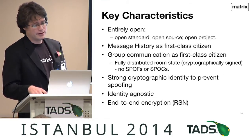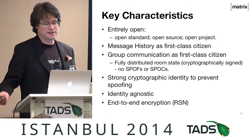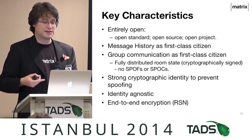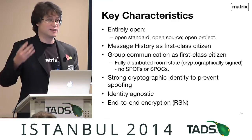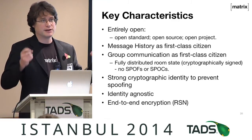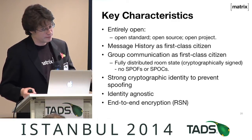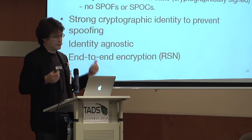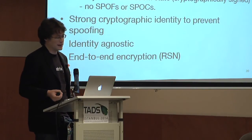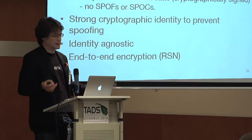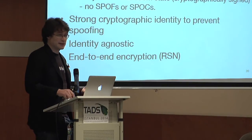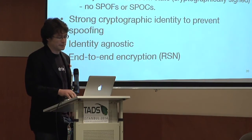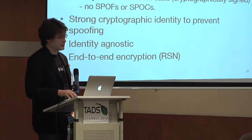Our characteristics: completely open — open standard, open source, open project, open federation. Message history is a first-class citizen; this is something loads of people have got wrong over the years. Nowadays it's table stakes — you have multiple devices, you want your history in sync on both of them. Group communication is also first class; one-to-one chat is just a subset of group chat. You want strong crypto to prove identities and prevent tampering with your distributed message history. We want to be identity agnostic — we don't want to add yet another Jabber ID or Skype ID into the mix — and we want to provide end-to-end encryption, which hasn't landed yet but will real soon now.